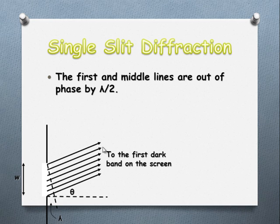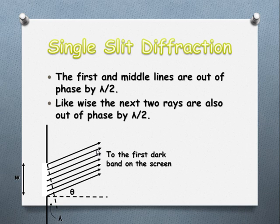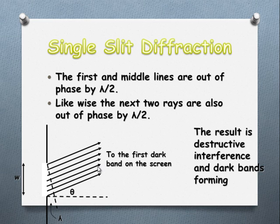As we work our way down, the next wave and the other one will be out of phase, and the next one down and the one below that will be out of phase. So each of the waves here interact with each other and cause destructive interference, and there we get that black band appearing on the screen.